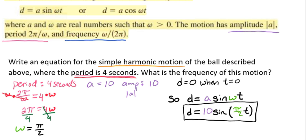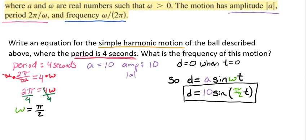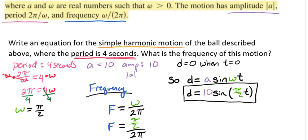So how do we find our frequency? So we've written our equation, now we want our frequency. So our frequency is going to be ω divided by 2π. So we'll go ahead and plug in what we have. So we'll go ahead and plug in our ω. And that's going to give us f equals π over 2 divided by 2π.